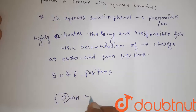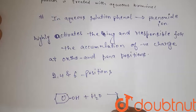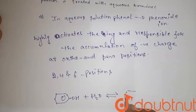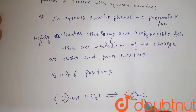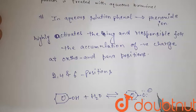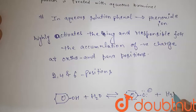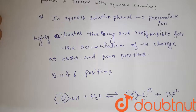Phenol plus H2O gives phenoxide ion and H3O positive. This is the explanation, thank you.